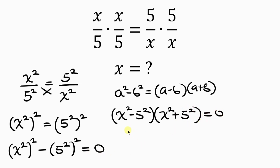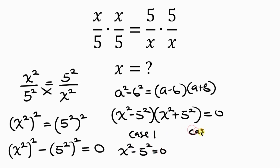And this is equal to 0. Notice that we have two cases. Case 1 is either x squared minus 5 squared is equal to 0. Or case 2, which is x squared plus 5 squared is equal to 0. We're going to be solving these cases one after the other.